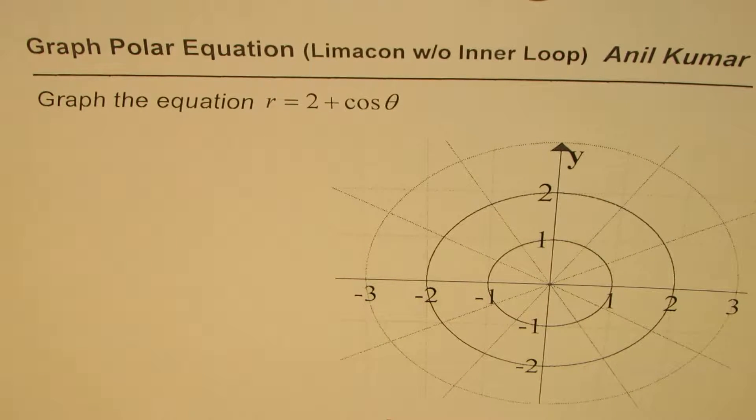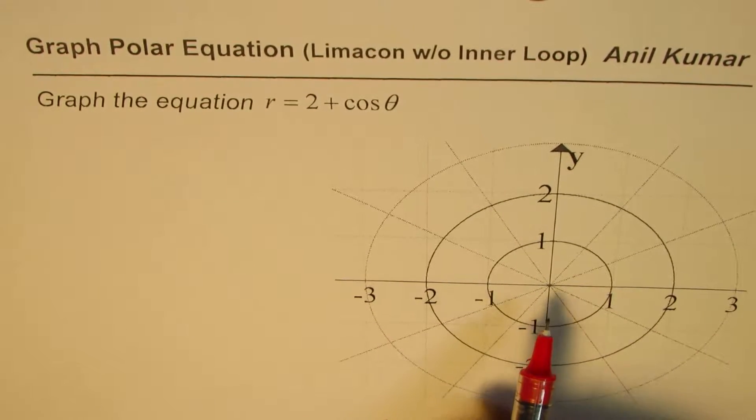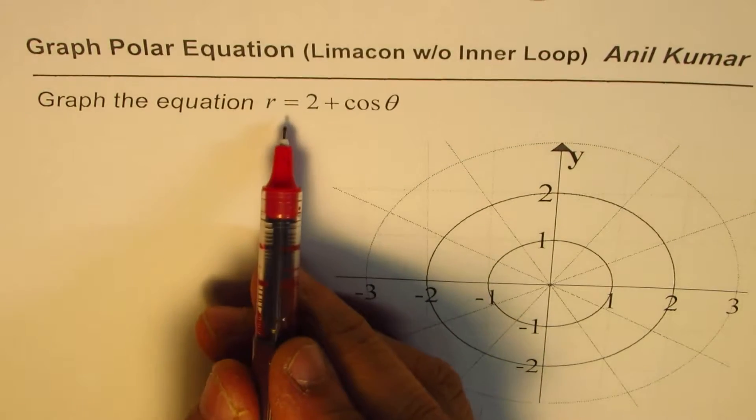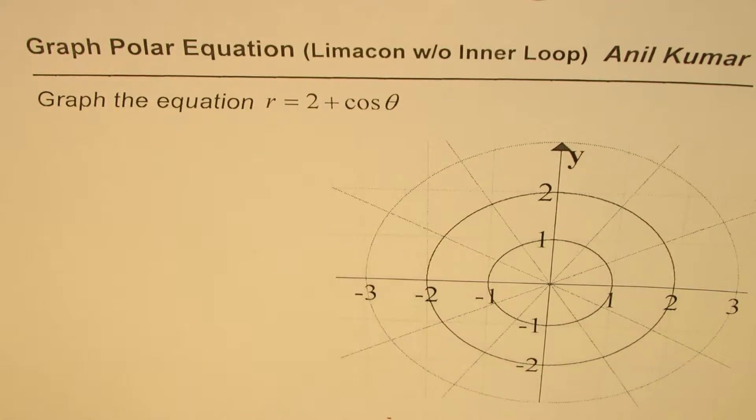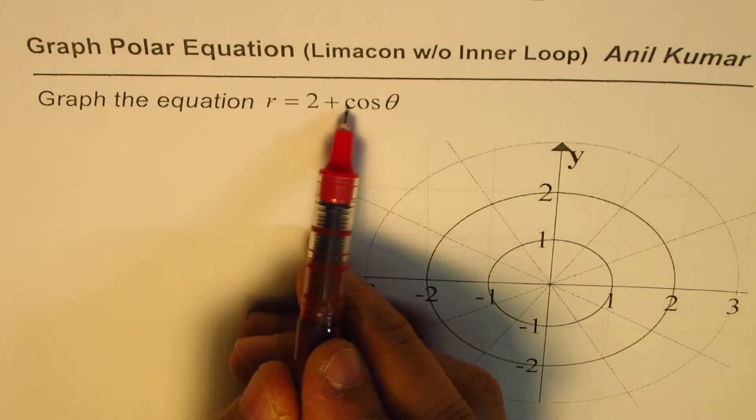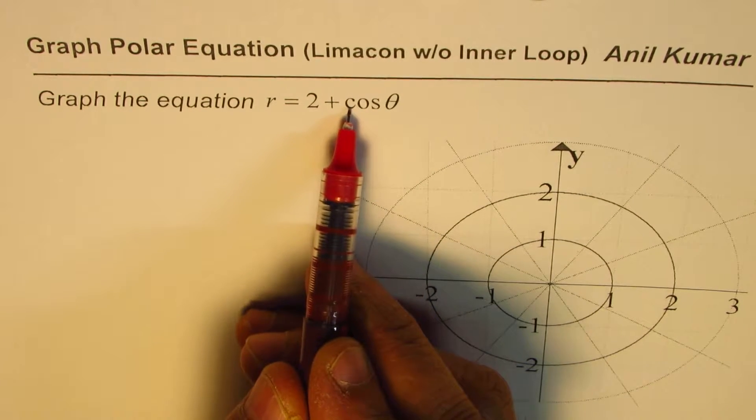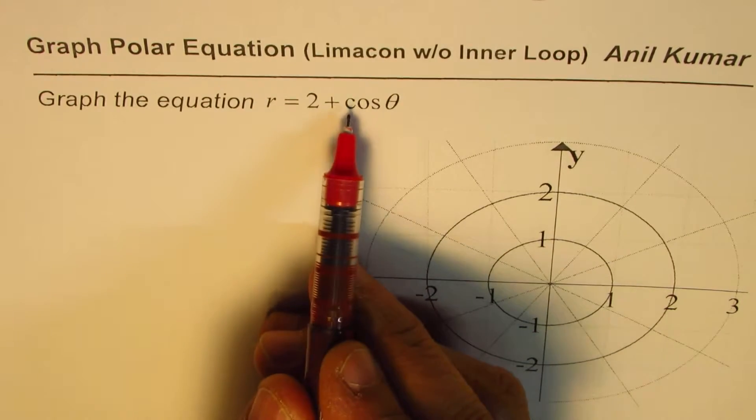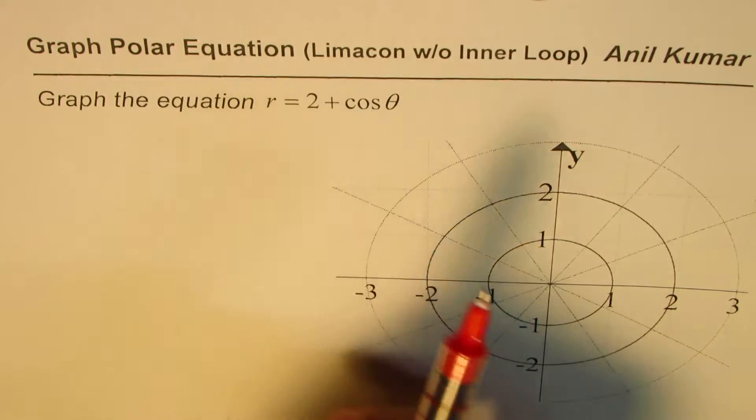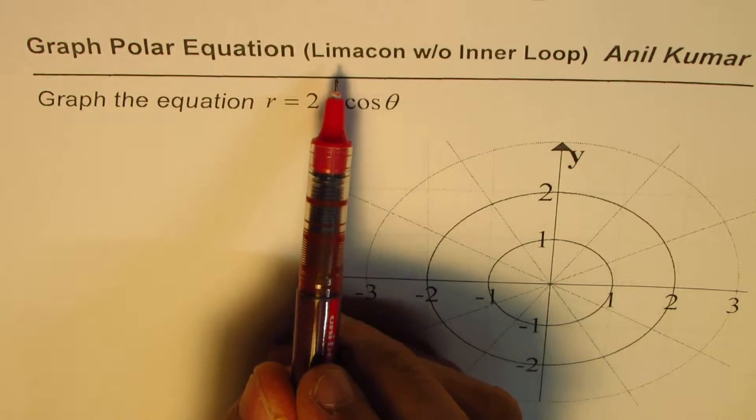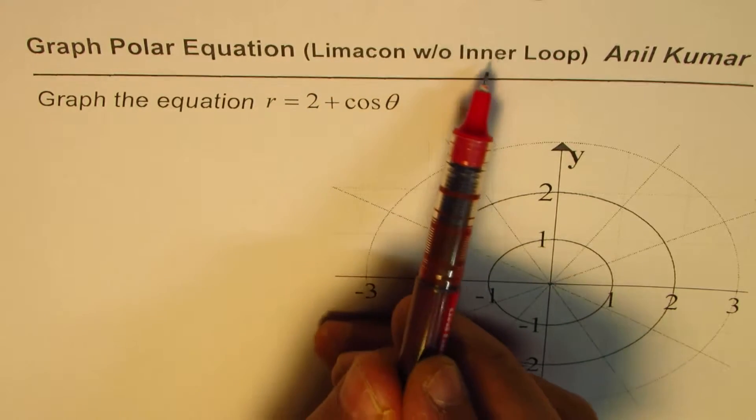I'm Anil Kumar and in this video we'll try to understand how to graph the equation r equals 2 plus cos theta. In this you will see that 2 is greater than the coefficient of cosine theta, and once that is the case we do get a graph which is well known by the name Limaçon without inner loop.